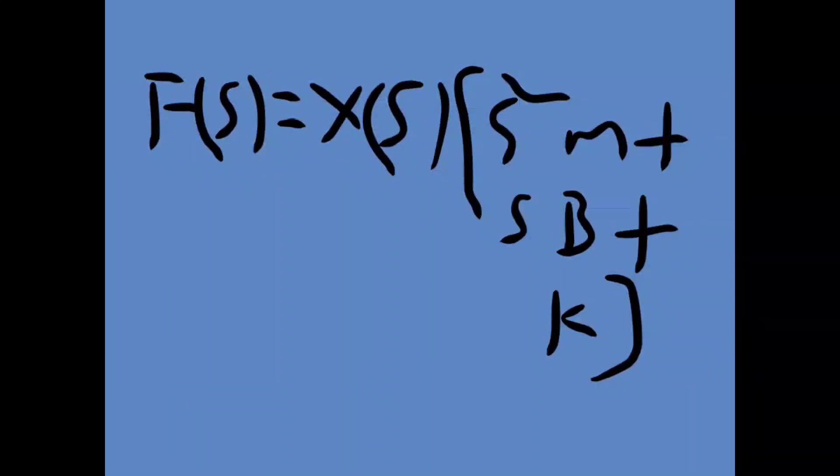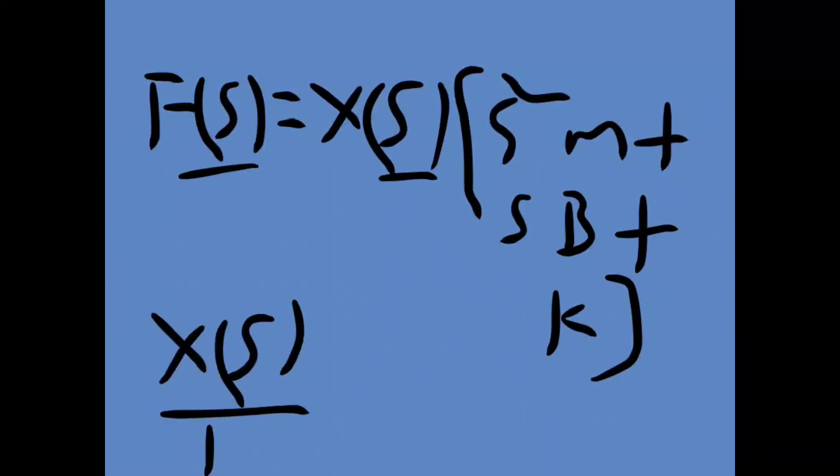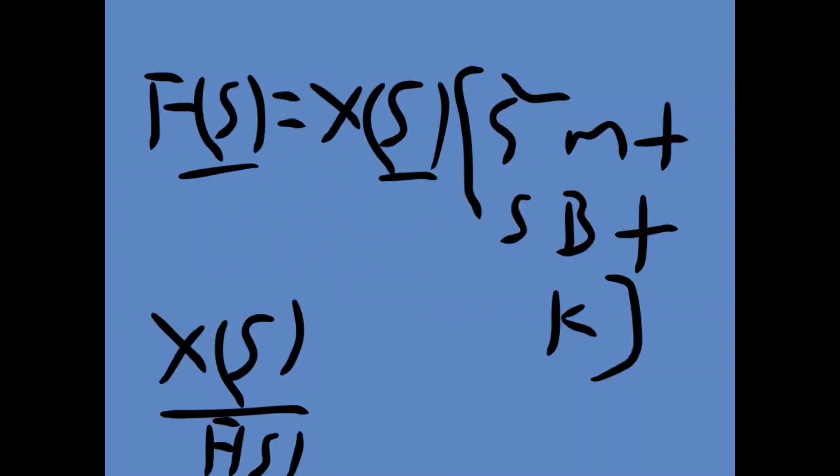So now we need X(s) by F(s). X(s) by F(s), so we need to find X(s) by F(s). So when we rearrange, X(s) by F(s) equal to 1 by this entire thing.